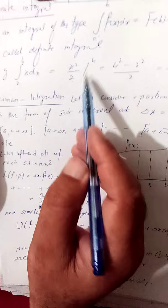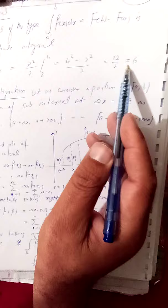called the definite integral. For example, integration from 2 to 4 of x dx, which is equal to x²/2 with limit 4 to 2. Putting in: 4² minus 2² divided by 2, which is equal to 6.